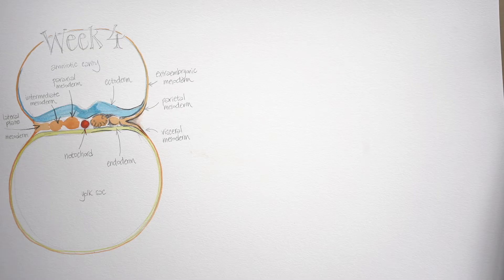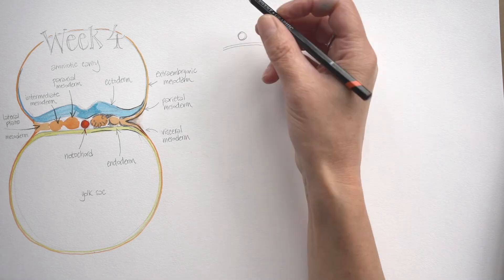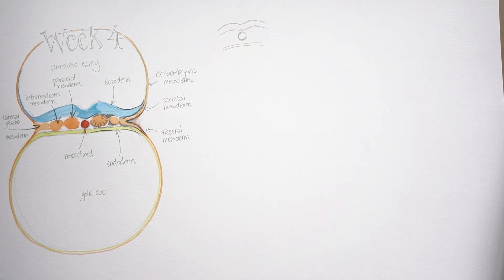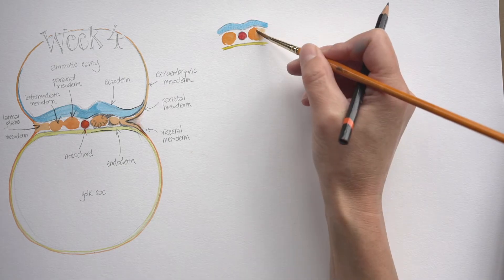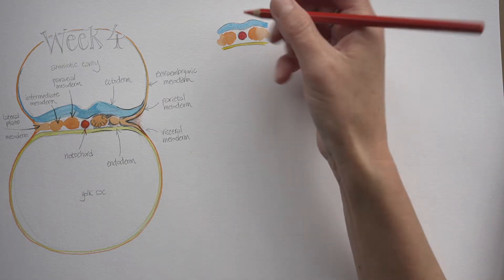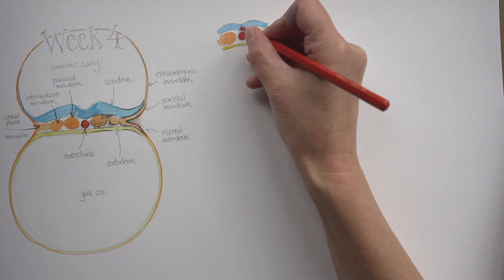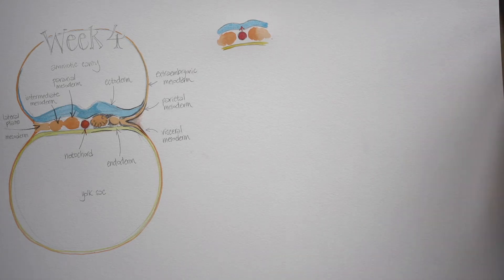There are particular genes that are switched on in the notochord and associated tissues that mean the cells start to secrete proteins with wonderful names like noggin, chordin, and follistatin. These proteins act as chemical messengers talking to the overlying ectoderm and encouraging it to thicken up and start folding in. So I've just drawn a little section from the center of this cross section through the embryo here, with the notochord beginning to talk to that overlying ectoderm at around 19 days after fertilization.